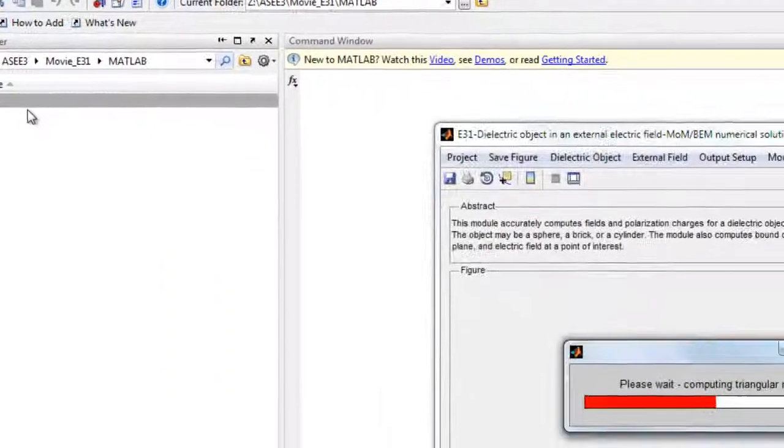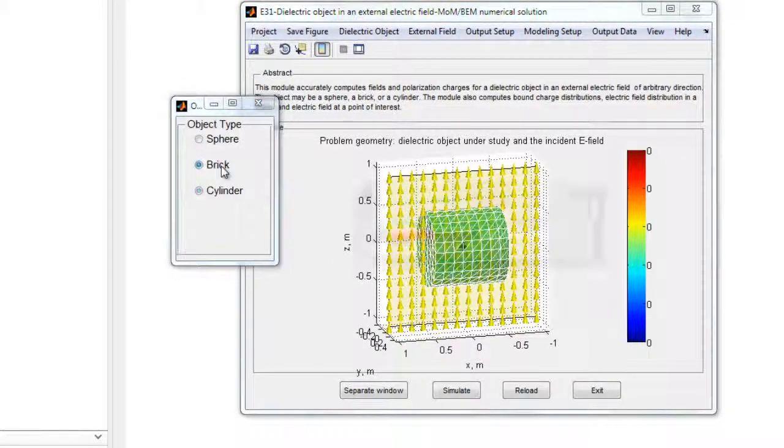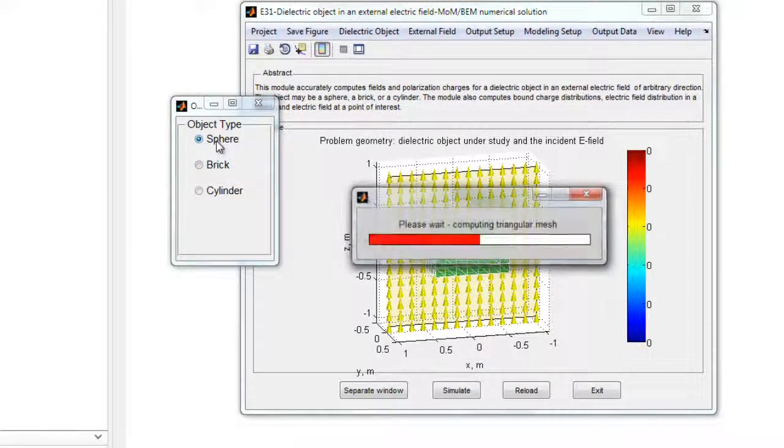To begin, run the module in MATLAB, and the default geometry is displayed. There are several object types available, including bricks, spheres, and cylinders.